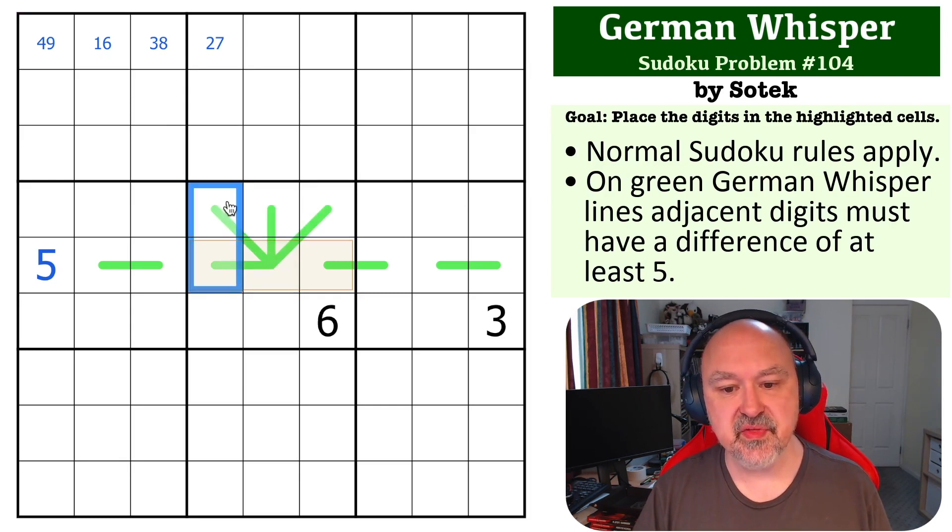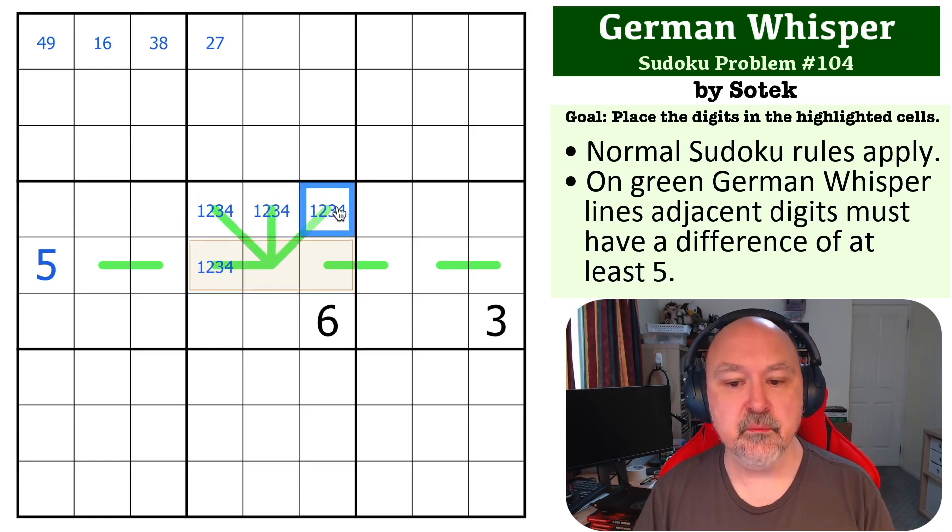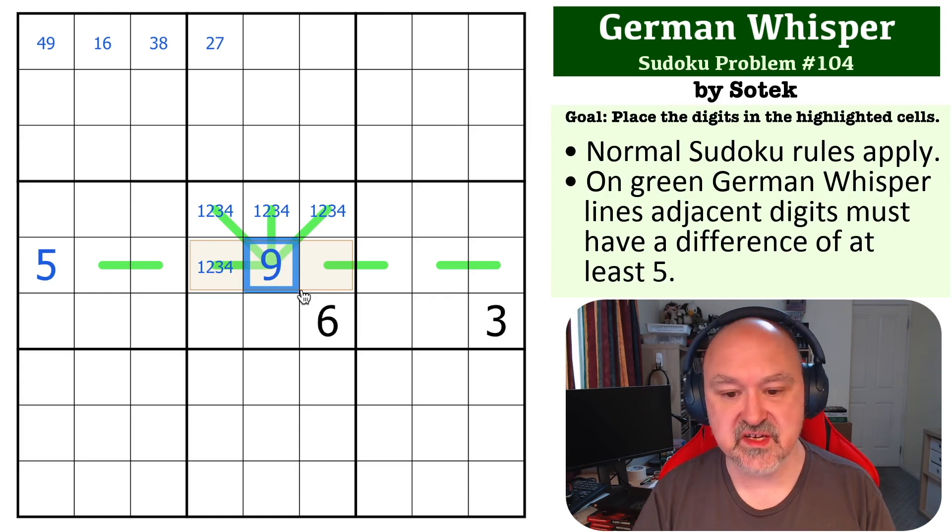So because this cell is adjacent to these four cells, these must all either be all high or all low and they can't all be high because the six is available. So these are all low and they are one, two, three, four. Now one of these has to be four so this becomes the nine.